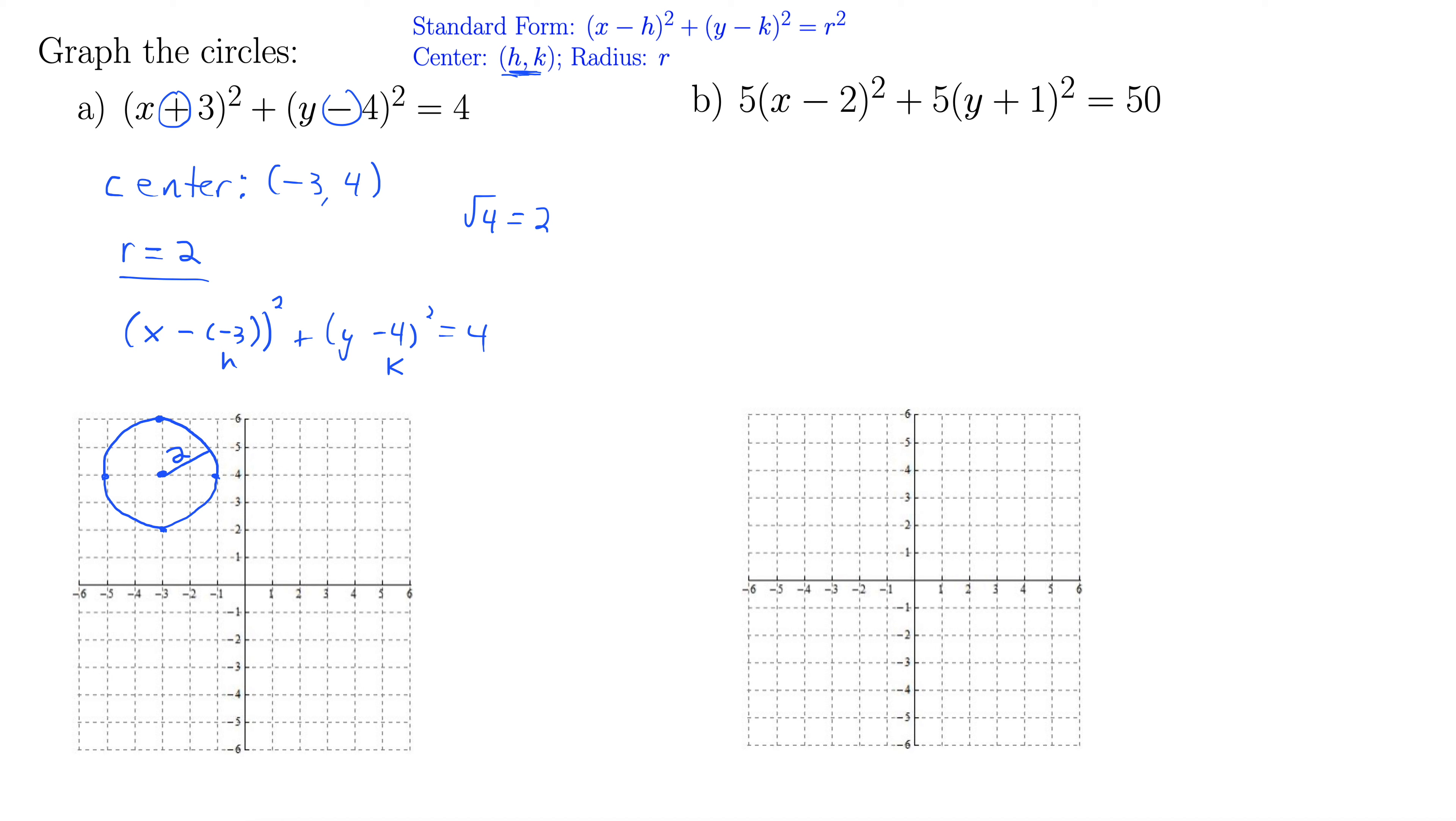b is kind of in a strange form here because we have these weird 5s. We don't want those 5s right there because our standard form has no coefficients out in front. So I am going to divide both sides by 5 to get rid of those 5s out front. That leaves us with (x - 2)² + (y + 1)² = 10.